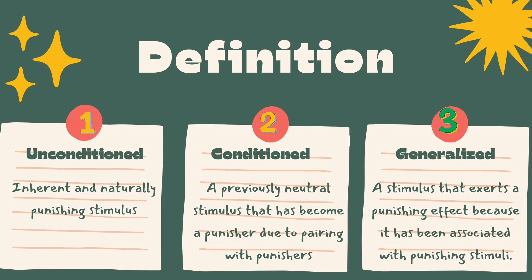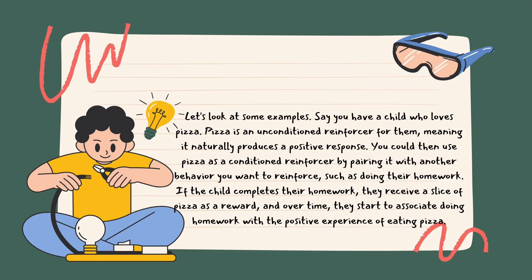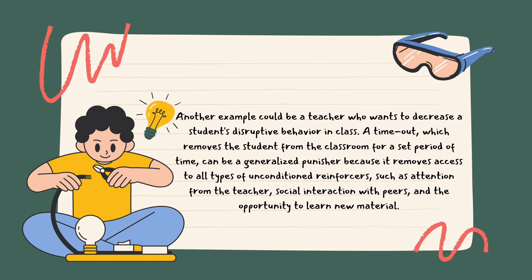For example, a child who loves pizza — pizza is an unconditioned reinforcer for them. You could then use pizza as a conditioned reinforcer by pairing it with a desired behavior like doing homework. If the child completes their homework, they receive a slice of pizza, and over time they associate homework with the positive experience of eating pizza. Another example: a teacher may use a timeout — which removes the student from the classroom — as a generalized punisher, because it removes access to all types of reinforcers such as teacher attention, peer interaction, and learning opportunities.